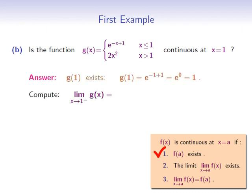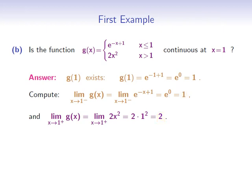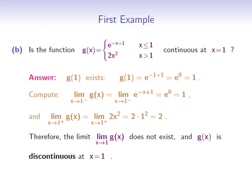The limit of g of x as x approaches 1 from the left will be equal to the limit of e to the negative x plus 1 as x goes to 1 from the left. Since e to the negative x plus 1 is a continuous function, this limit equals e to the 0, which is 1. Now the limit from the right: the limit of g of x as x approaches 1 from the right equals the limit of 2x squared as x goes to 1 from the right, which is 2 times 1 squared, equal to 2. The two one-sided limits are not equal, which means the limit of g at 1 does not exist. So g of x will be discontinuous at x equals 1 as the second condition for continuity fails.